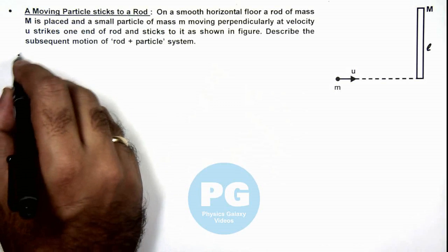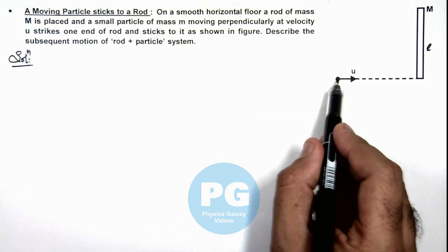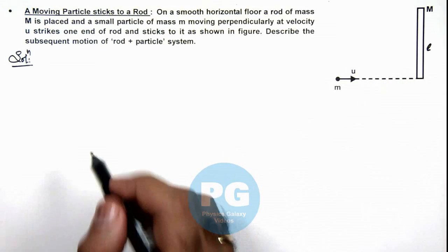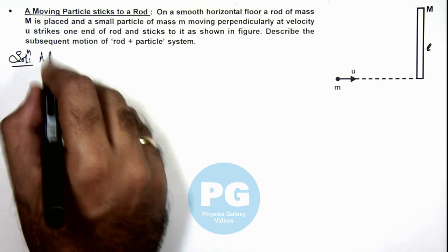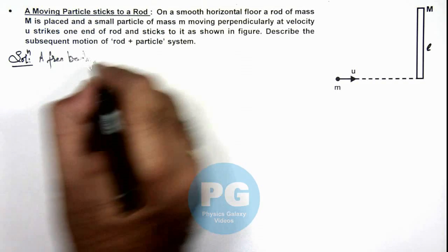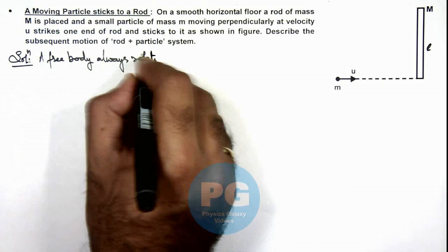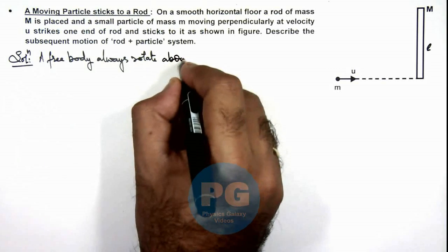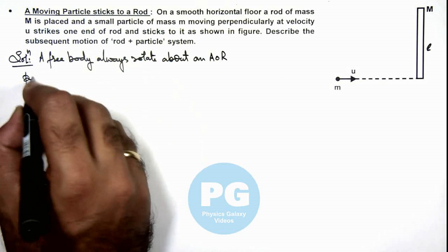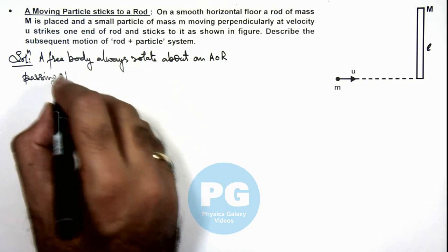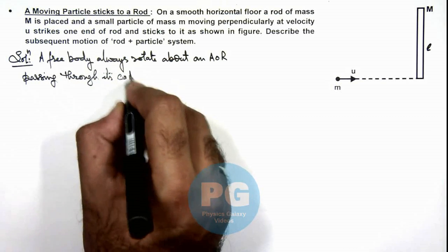Here we know well that if this particle sticks to the rod, the center of mass of rod changes. A free body always rotates about an axis of rotation passing through its center of mass.